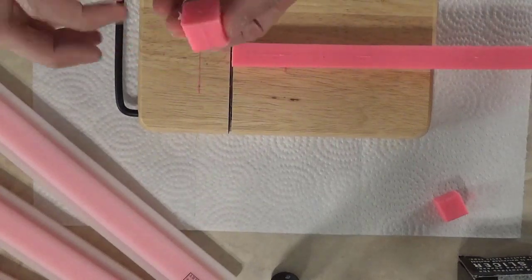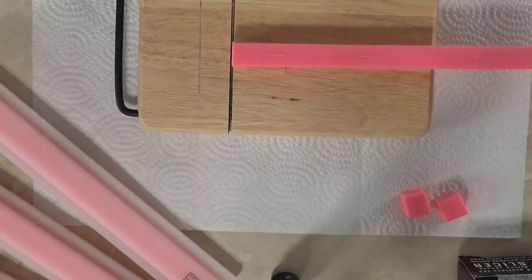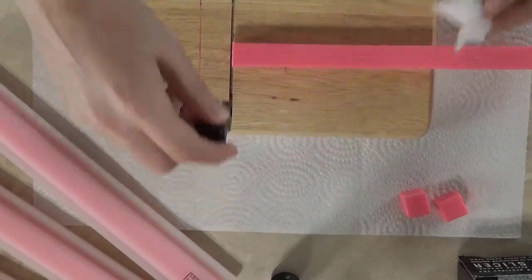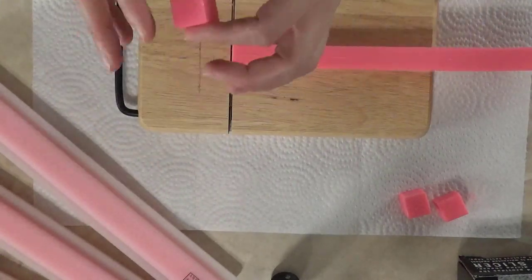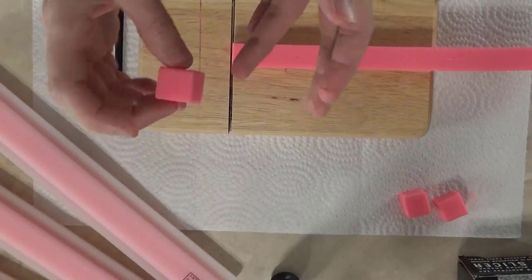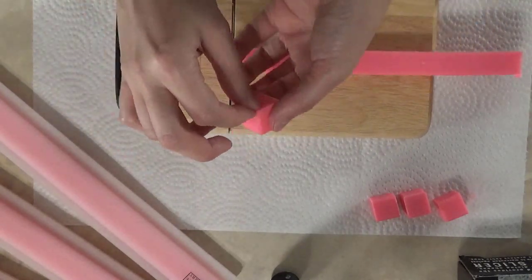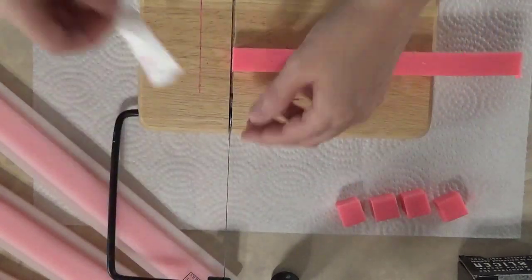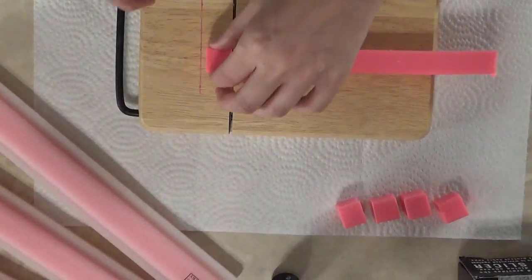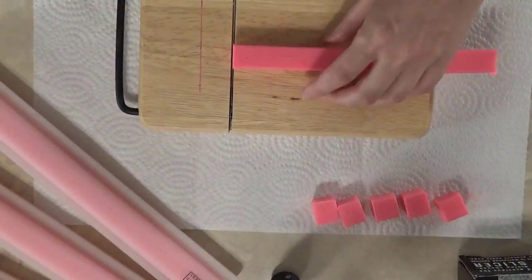And I am simply slicing the long rectangle embed into one-inch cubes. Now you can do this in varying sizes. I typically do one inch or half an inch. There's not a right or wrong.